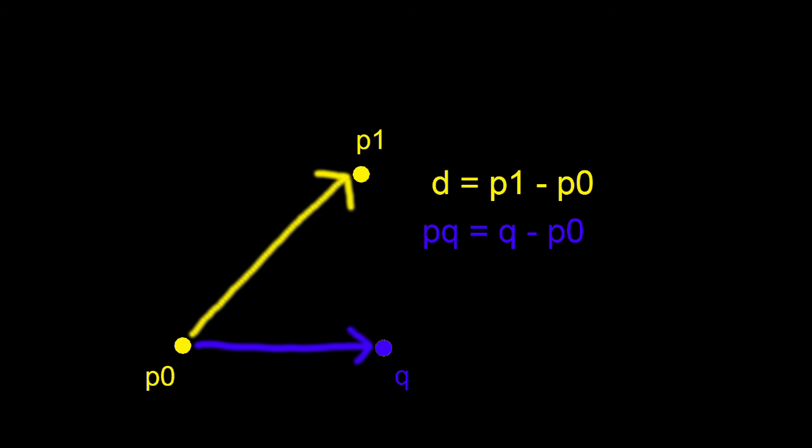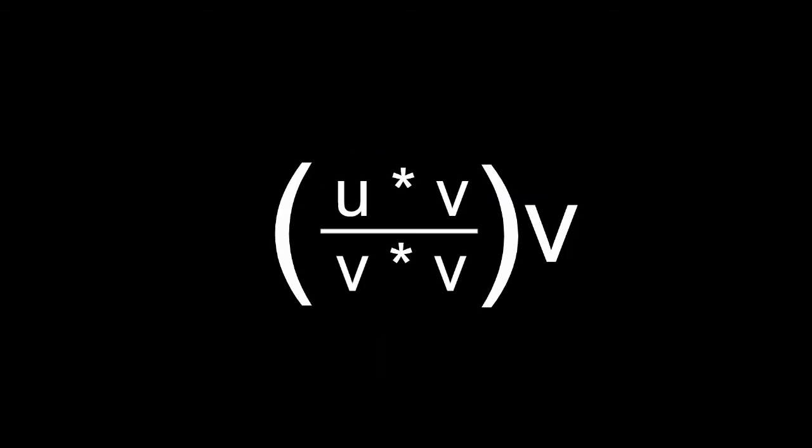Then we can look at our vector projection equation, which states that you can project a vector U onto V with U dot V divided by V dot V multiplied by the vector V. Remember the dot product takes two vectors as inputs and returns a scalar floating point number as a result. A float multiplied by a vector scales the X, Y, and Z components by that amount equally and thus must be collinear to V or the zero vector if the scalar projection is zero.